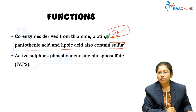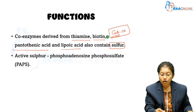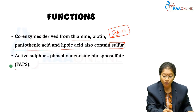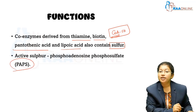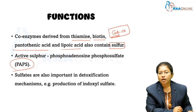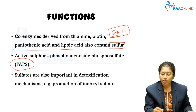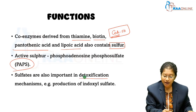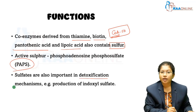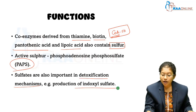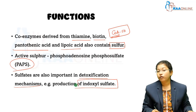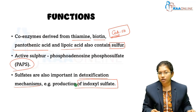Next is active sulphur: phosphoadenosine phosphosulphate (PAPS), which is produced during the metabolism of cysteine and methionine. Additionally, sulphates are important in the detoxification mechanism — sulphur produces indoxyl sulphate, making it important for detoxification.